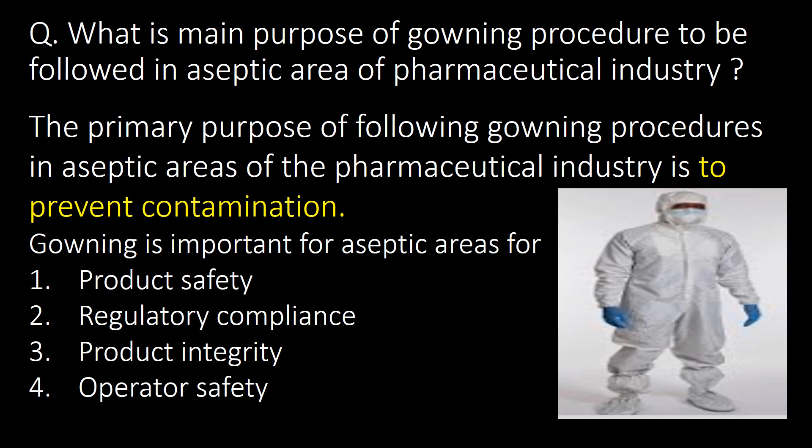Welcome. We will start with a few basic questions and then go into detail. First question: what is the main purpose of the governing procedure to be followed in the aseptic area of the pharmaceutical industry? The primary purpose of following governing procedures in the aseptic area of the pharma industry is to prevent contamination. Gowning is important for aseptic areas for product safety, regulatory compliance, product integrity, and operator safety.